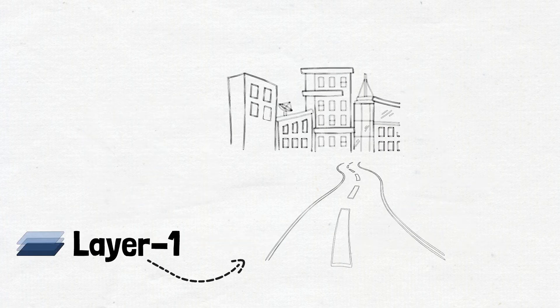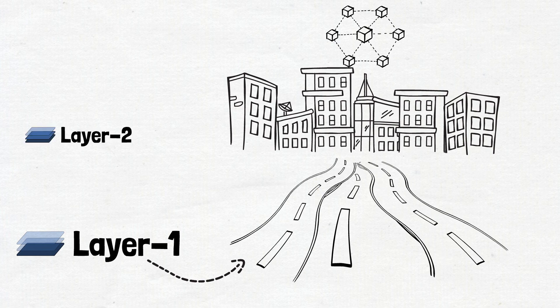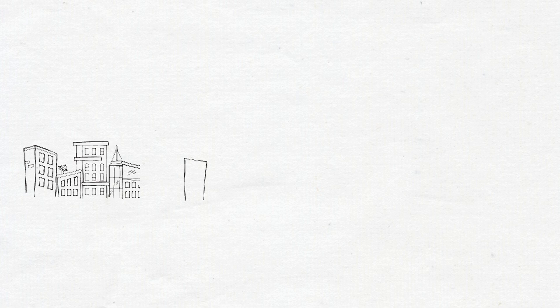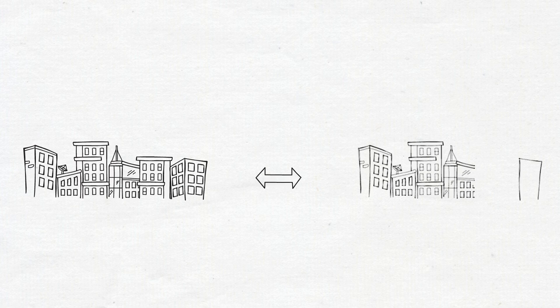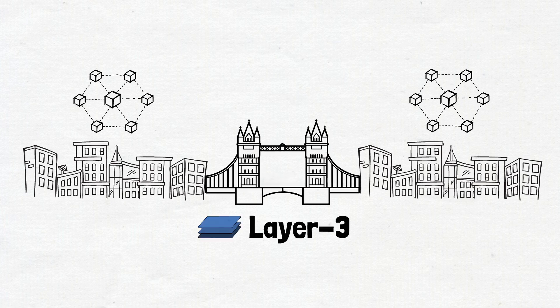Think of Layer 1 as the main streets in a city, the basic roads where everything happens in the blockchain world. In this context, Layer 2 would be those express lanes you find on some roads, these speed up transactions and ease the traffic on Layer 1 networks. But sometimes people want to travel between different cities, or in our case, interact with multiple blockchain networks. So in this story, Layer 3 can fill the role of the bridges and highways that connect different cities, letting everyone travel between different places smoothly.